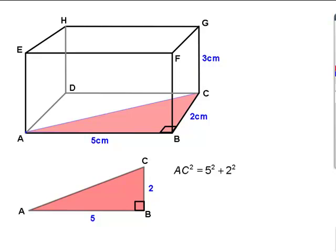And that's fairly straightforward. AC squared is 5 squared plus 2 squared, which is 25 plus 4, which is 29.